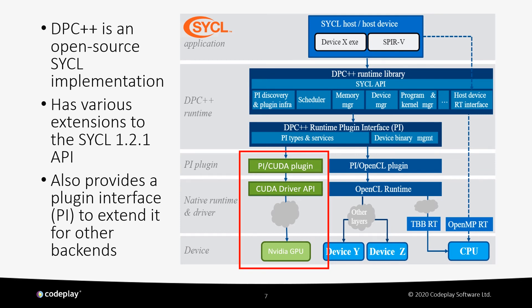DPC++ is an open source SYCL implementation led by Intel, with a long-term goal to merge into upstream Clang and LLVM. DPC++ has various extensions to the standard SYCL 1.2.1 API and also provides a plugin interface referred to as PI, which allows it to support additional backends beyond the existing OpenCL backend. This is where we added support for NVIDIA GPUs via CUDA. As you can see in the diagram, all backends use the same DPC++ runtime which calls down into PI, and we added a new CUDA backend that directs PI calls down to the CUDA driver API, which ultimately enqueues work to the NVIDIA GPUs.